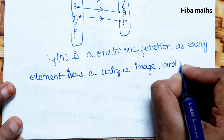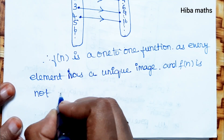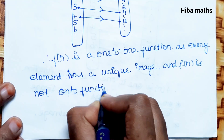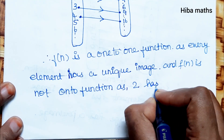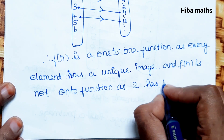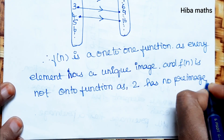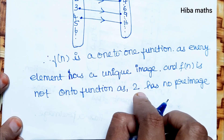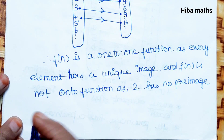f(n) is not an onto function because 2 has no preimage — there is no element in the domain that maps to 2. So 2 is an image with no preimage, confirming the function is not onto.